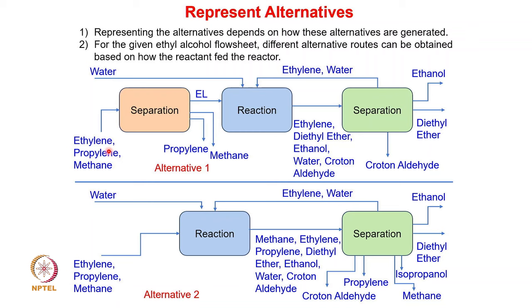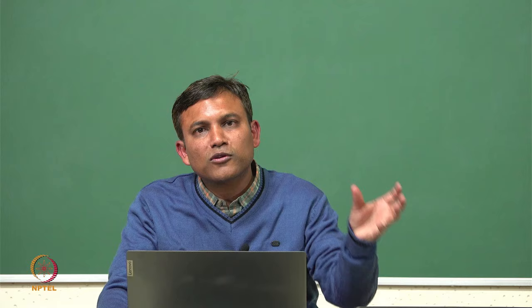There are multiple alternatives possible: separating propylene but not methane, separating methane but not propylene, or sending both directly to the reactor. For all these alternative routes, one must determine which is viable using cost calculations. Once a route is represented as a process flow sheet, material and energy balance is performed, and preliminary cost calculations are done. If the profit outweighs the cost, one can proceed with that design for further refinement.